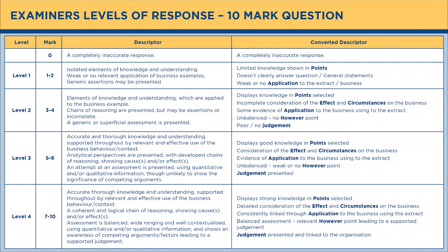Looking at the 10 mark marking grid, to get half marks or above you need to be in level 3. Level 3 is 5 to 6 marks, level 4 is 7 to 10 marks. My students and I converted these into descriptors that link to the paragraph structure we use. The only difference between the 10 marker and the 12 marker is that the 10 marker says 'judgment' rather than 'conclusion.' Level 2 is if you haven't got a judgment or you've got a poor one. Having a presented judgment gets you level 3.